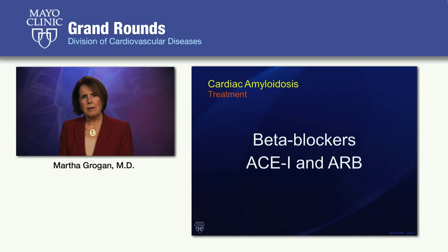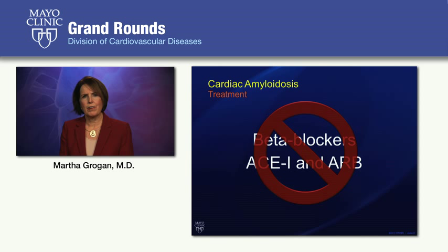For AL cardiac amyloidosis, cardiologists should recognize that beta blockers, ACE inhibitors, and ARBs almost always have no role in management and many times worsen heart failure significantly. Don't use those medications unless you have a very good reason — most of these patients have normal ejection fraction, so these agents are not indicated. When you lower heart rate and blood pressure in patients who often have autonomic dysfunction, they do very poorly.